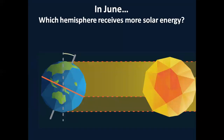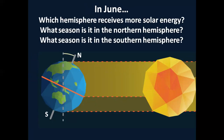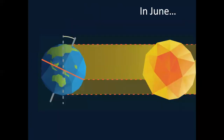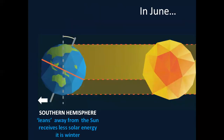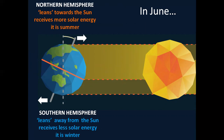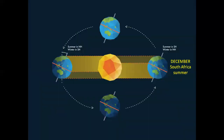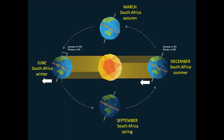In June, the northern hemisphere leans towards the sun, receives more solar energy, and it has summer. In December, South Africa has summer because the southern hemisphere leans towards the sun. In March, it is autumn. In June, it is winter because the southern hemisphere leans away from the sun. And in September, it is spring.